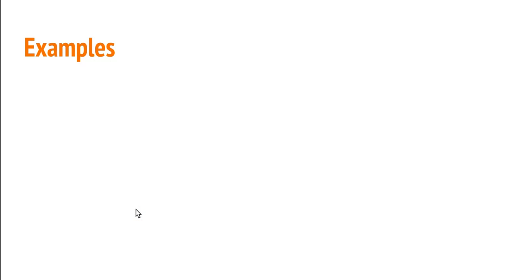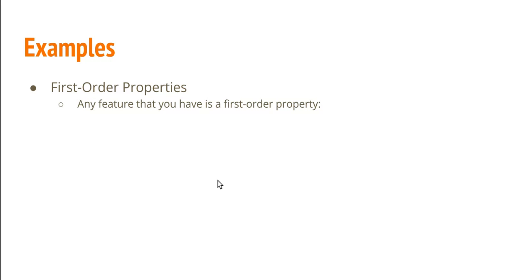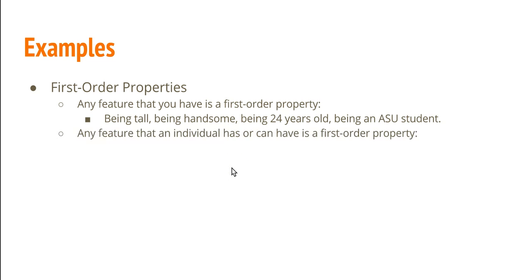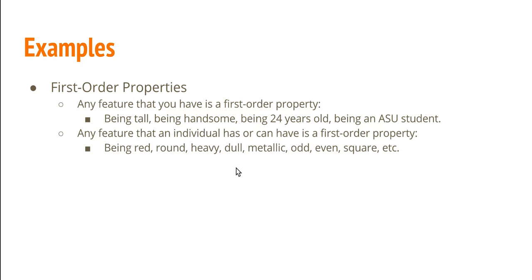Now let's look at some examples. To generate examples of first order properties, just pick any individual — say Dave, an ASU student. Dave is tall, handsome, 24 years old, and an ASU student. All of these are properties of Dave, who is an individual, so they're all first order properties. In general, any feature that an individual can have or does have is a first order property — being red, round, heavy, dull, etc.